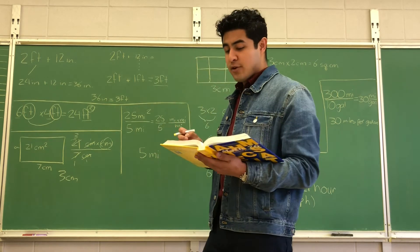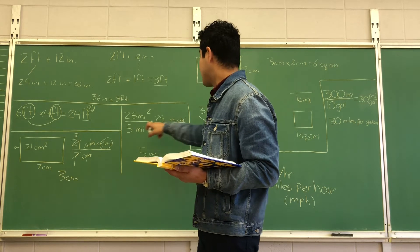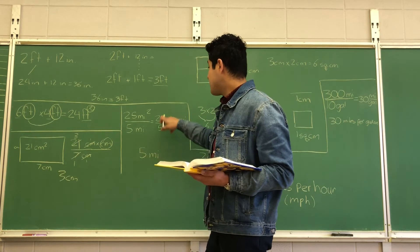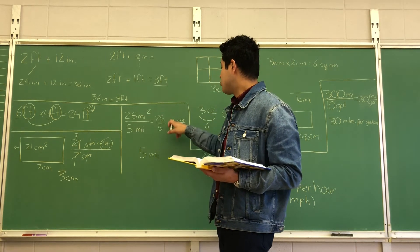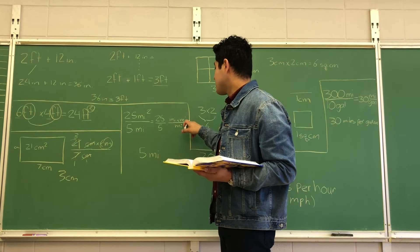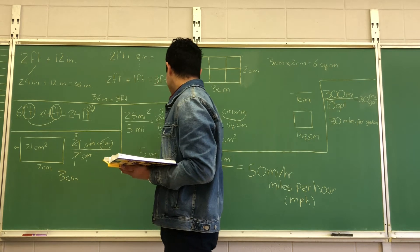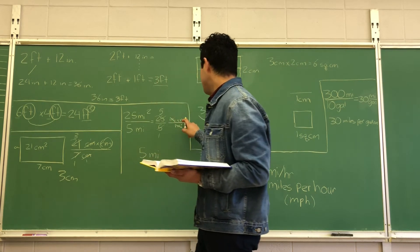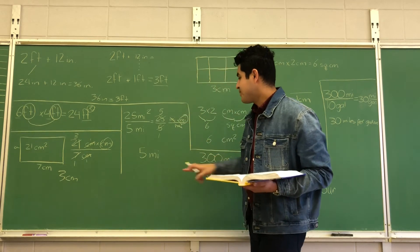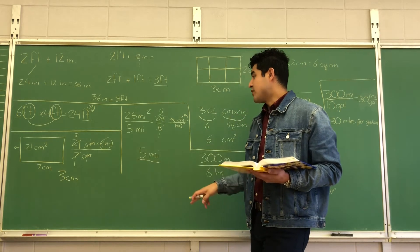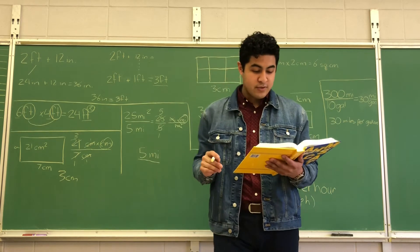Example 3: 25 miles squared over 5 miles. To divide the units, we write miles squared as miles times miles. I'm dividing the numbers and also dividing the units. Five goes into 25 five times evenly, and the units cancel out, leaving just miles. So the final answer is five miles — the quotient is five miles.